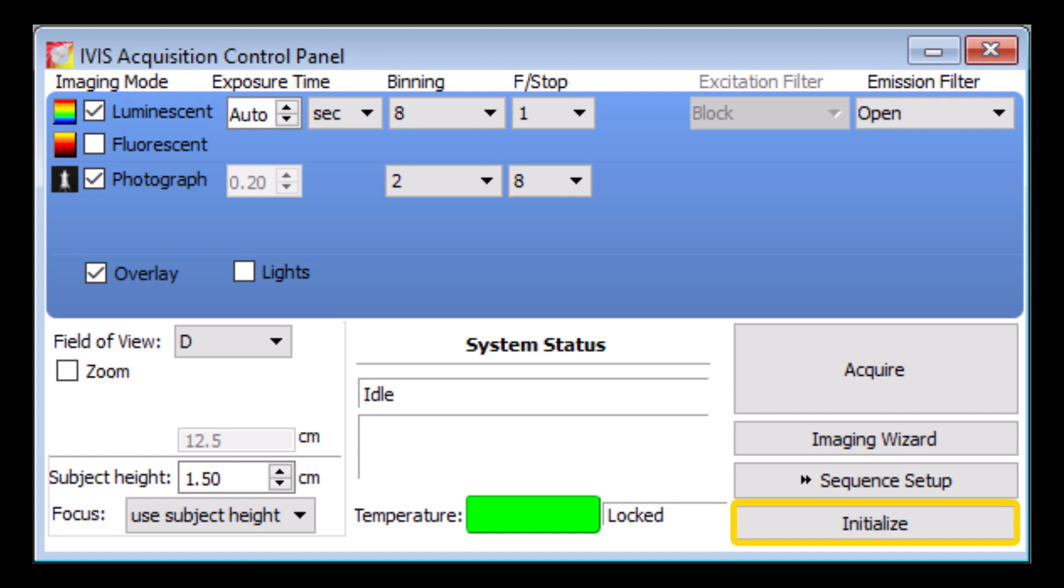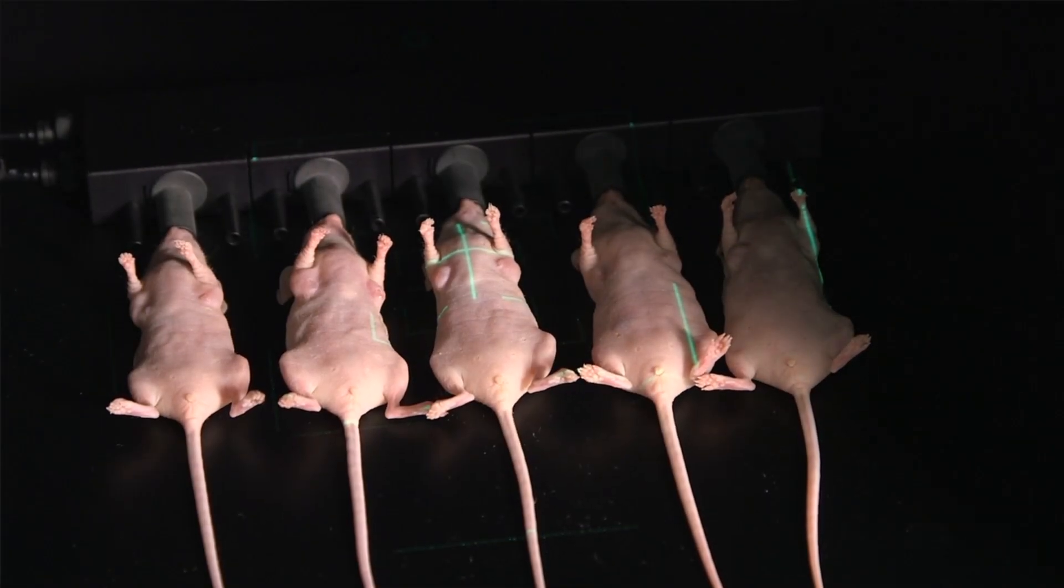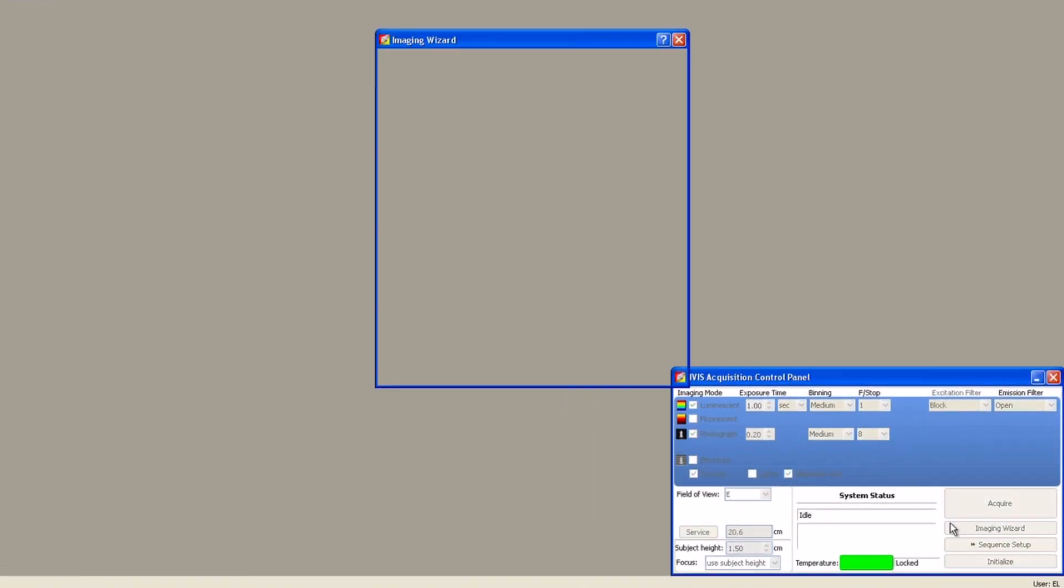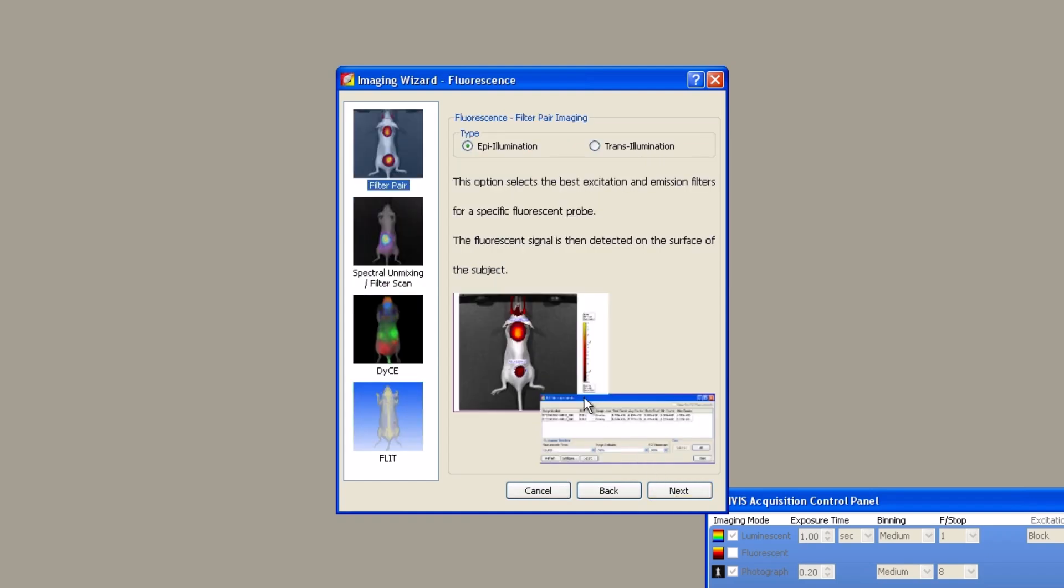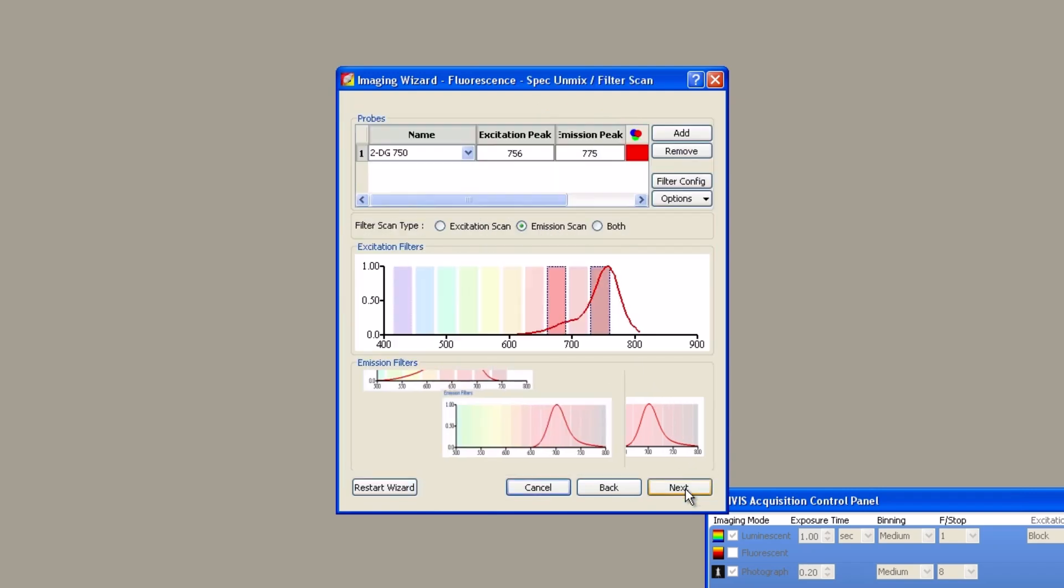We will inject these agents into our mice intravenously through the tail vein and image fluorescent activity at 24 hours post injection following the recommendations in the probe data sheets. After instrument initialization, anesthetize all five animals and transfer them to the heated stage in the IVIS. Select the imaging wizard in the control panel, choose fluorescence, spectral unmixing, epi illumination, and then click next.